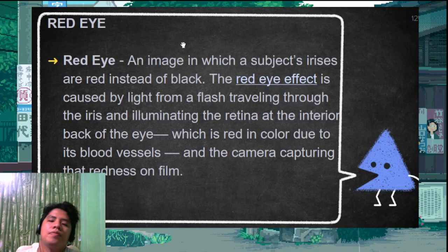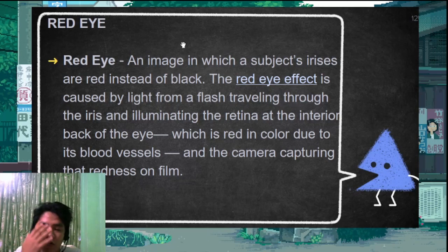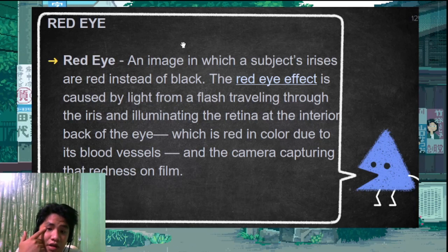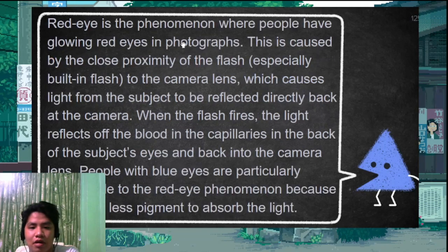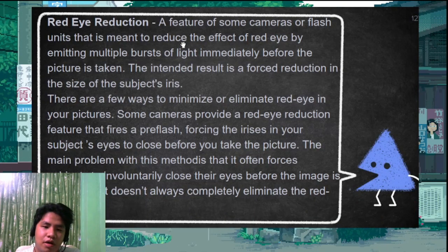Red eye occurs when the blood vessels in the retina of the eye are reflected by the camera flash, causing the eyes to appear red in the positive print. Modern cameras have red eye reduction features to address this.